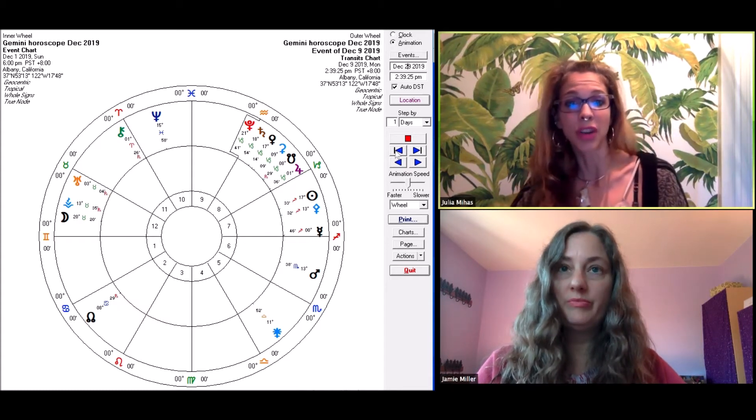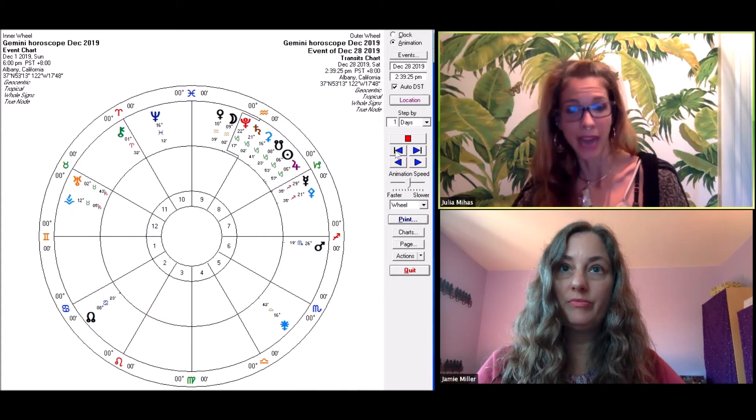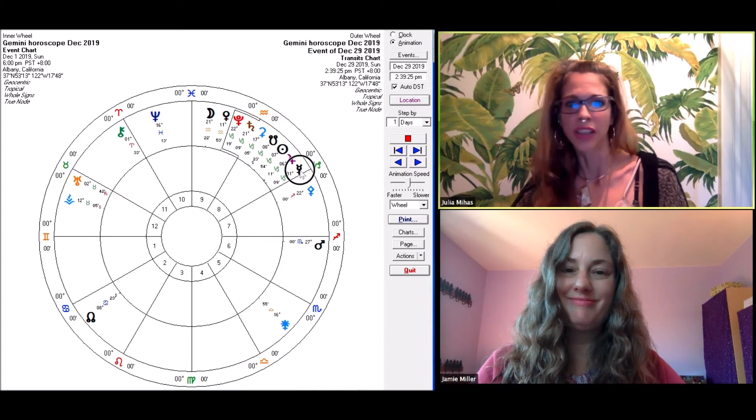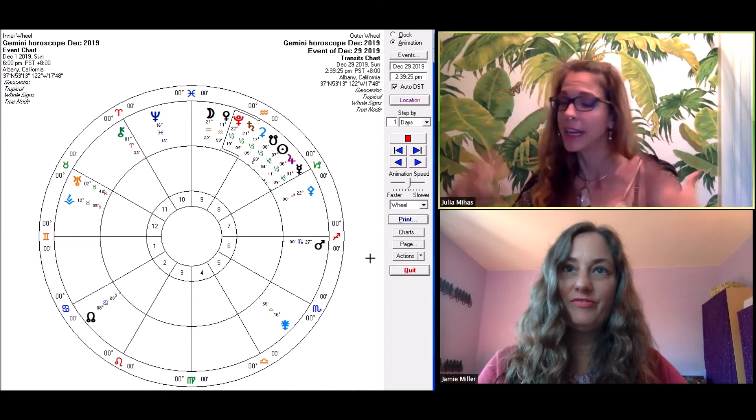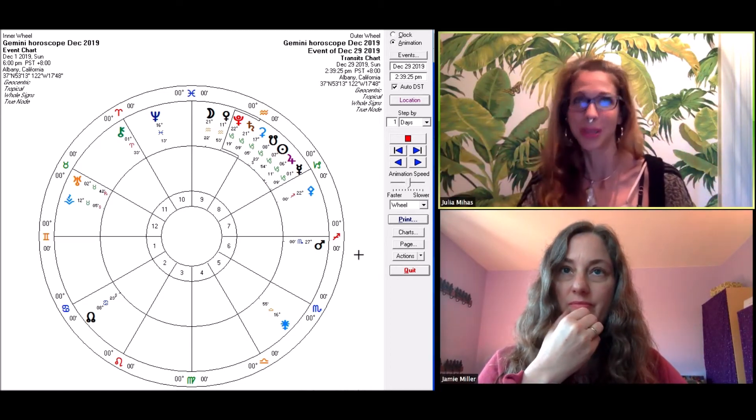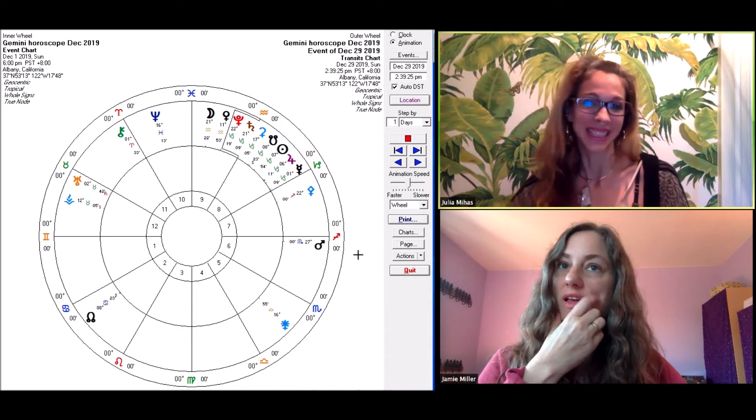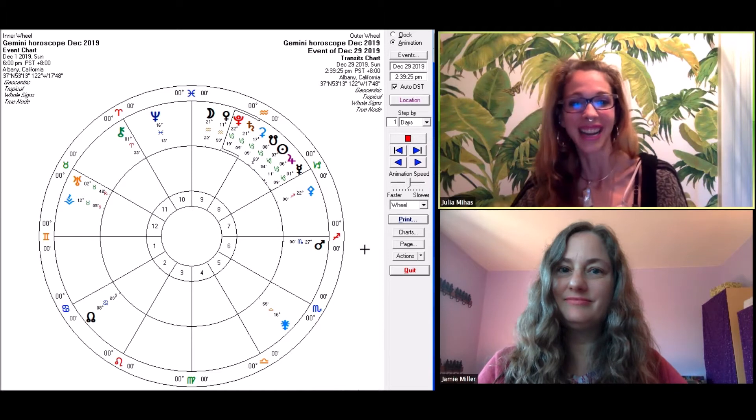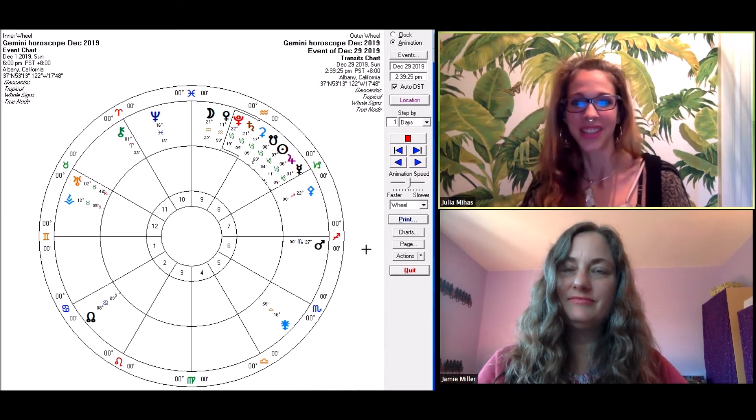And then Mercury enters Capricorn on December 28th. And that corresponds with your eighth house of security. So that means your mind is going to be turned to your greater security needs. Maybe thoughts of like how you can reduce your debt, because that eighth house also corresponds with shared resources of all kinds. What else is going on this month, Jamie?